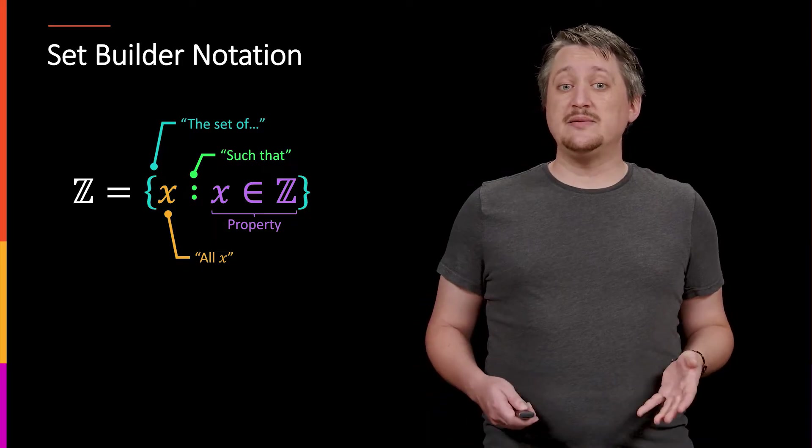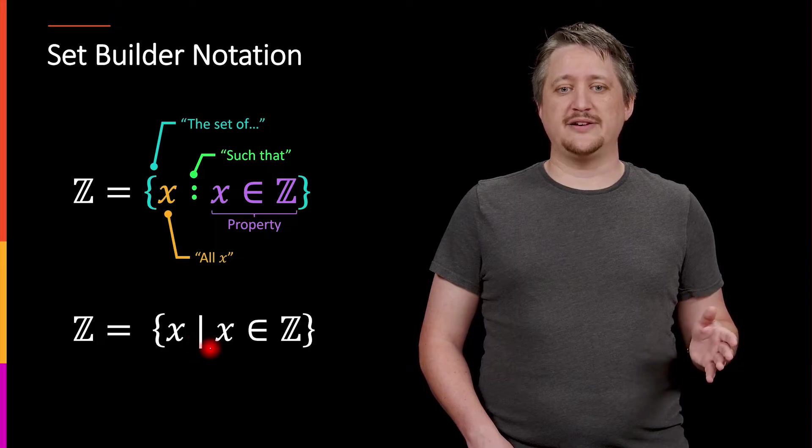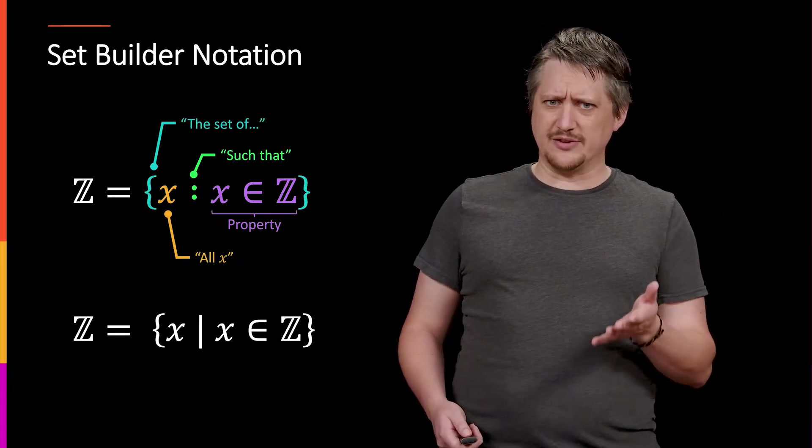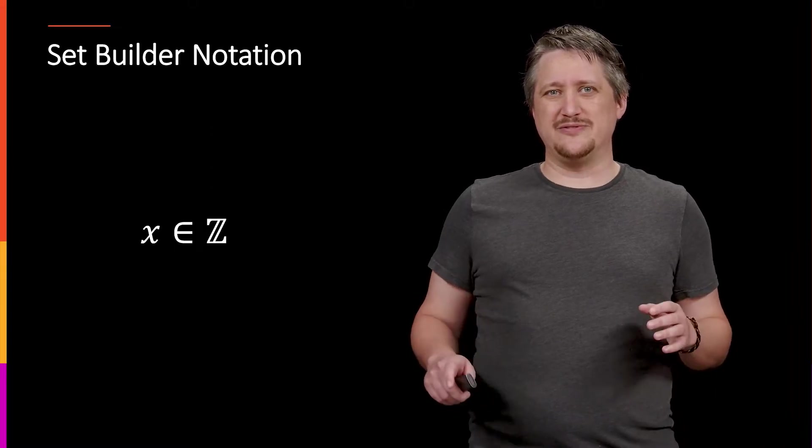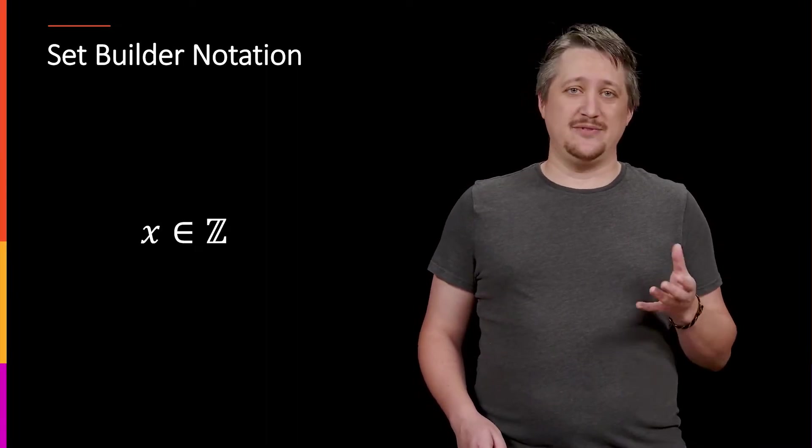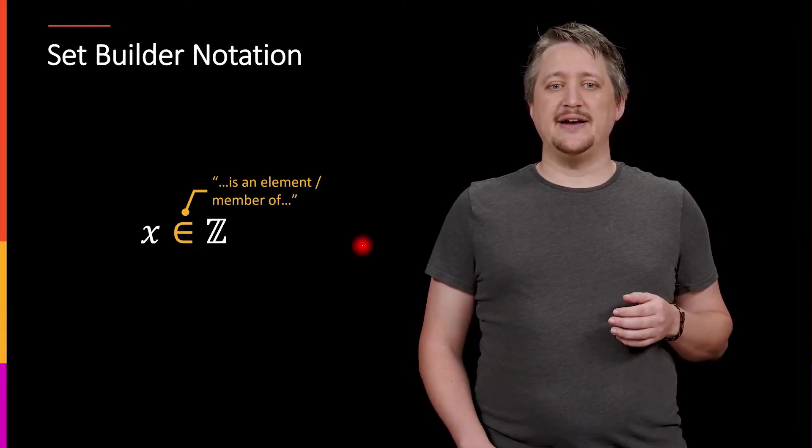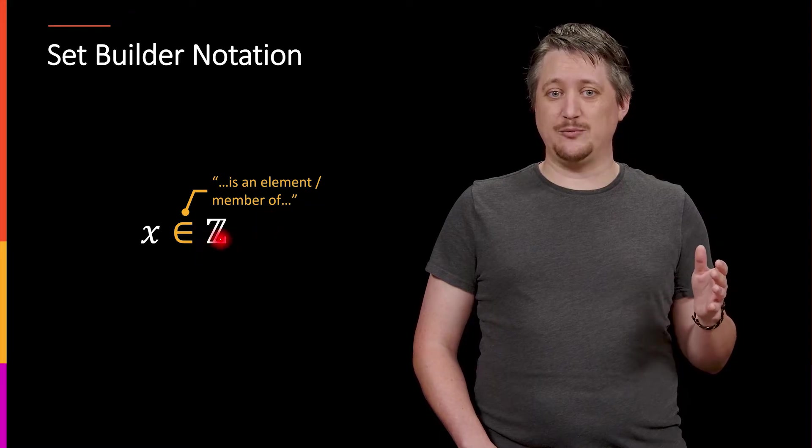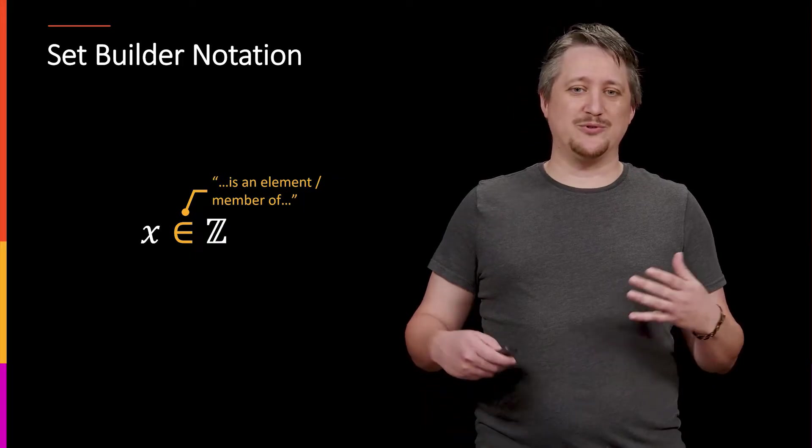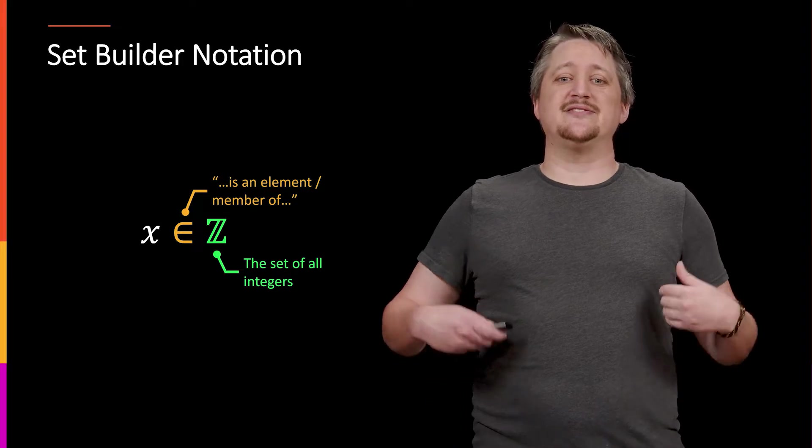And just as a quick note, sometimes that colon is instead some long vertical line. So this is entirely equivalent. You'd still read this as the set of all x such that property, close set. So as promised, I'm going to talk about what that property is. This x, this weird almost e thing but not quite, and then that weird looking version of a z.